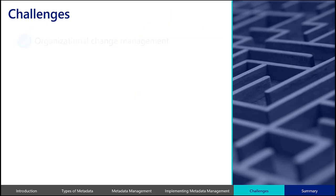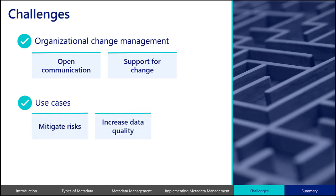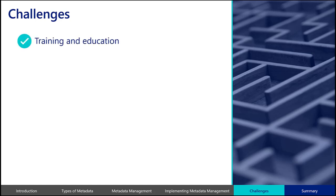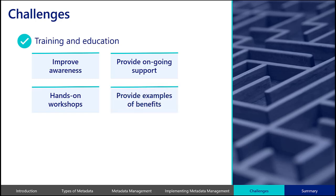To overcome these obstacles, employ organizational change management techniques to create an environment that fosters open communication and support for change. Develop use cases to explain how a metadata management program will mitigate risks, increase data quality and efficiency, and bring value to the organization. Establish training programs or develop educational materials to improve awareness and understanding of the value of metadata and metadata standards, and provide ongoing support for data users during the program development period and beyond. Implementing regular workshops and hands-on training sessions can be particularly effective as they allow stakeholders to directly interact with the tools and understand the practical benefits of metadata management. Providing real-world examples that demonstrate how metadata management solves common organizational problems can also help build buy-in.